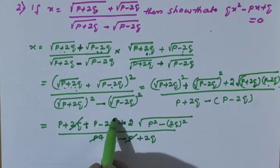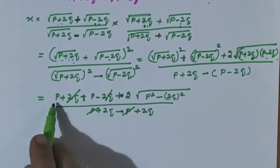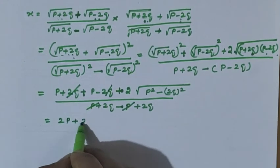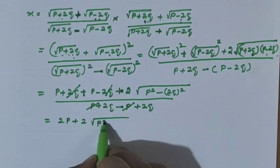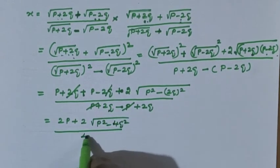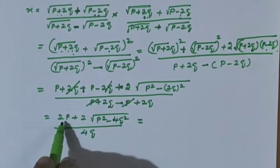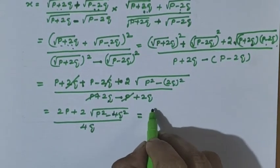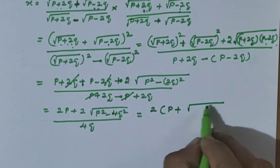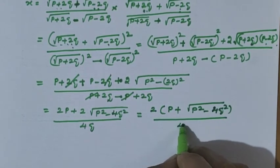Here also plus 2q minus 2q will cancel. So the numerator part: p plus p equals 2p, plus 2 into root of p squared minus 4q squared, divided by 2q plus 2q which is 4q. What is common? We can take 2 common from the numerator: 2 into p plus root of p squared minus 4q squared, divided by 4q.